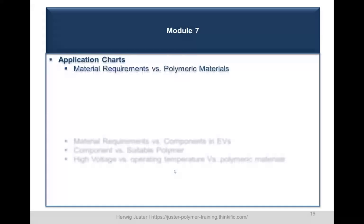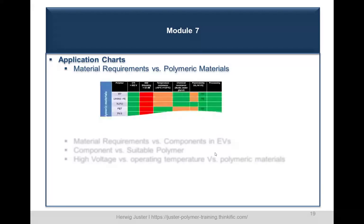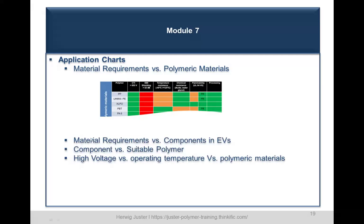Module seven — the last module — is dedicated to application charts. The idea is to compare, for example, material requirements versus polymeric materials, and material requirements versus components. We also compare high-voltage applications versus different operating temperatures versus polymeric materials. These charts can be downloaded and used during the material selection process as a support tool.